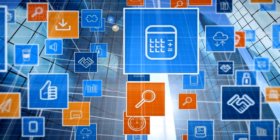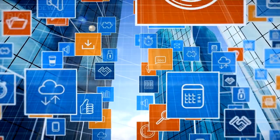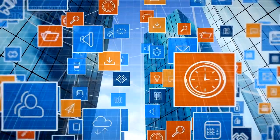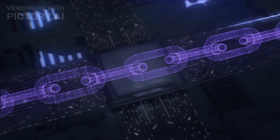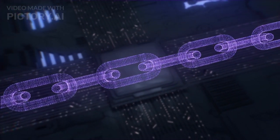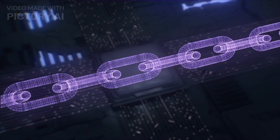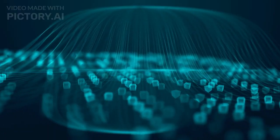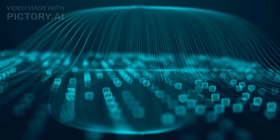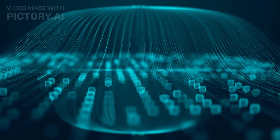Blockchain technology is a decentralized, transparent, and immutable digital ledger that records transactions across multiple computers. Unlike traditional systems where a central authority controls the database, blockchain operates on a peer-to-peer network, ensuring trust and security.